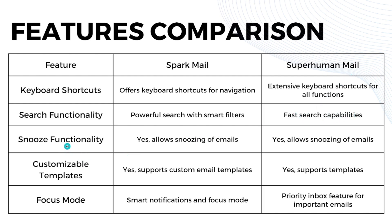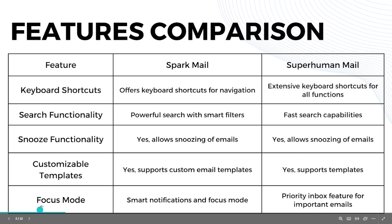For snooze functionality, both Sparkmail and Superhuman Email allow snoozing of emails. For customizable templates, both platforms support custom email templates. Lastly, for focus mode, Sparkmail has smart notifications and focus mode, while Superhuman Email has a priority inbox feature for important emails.